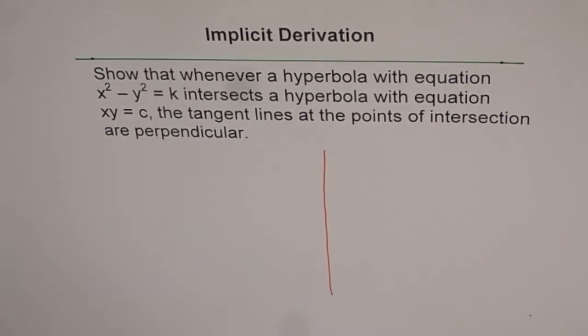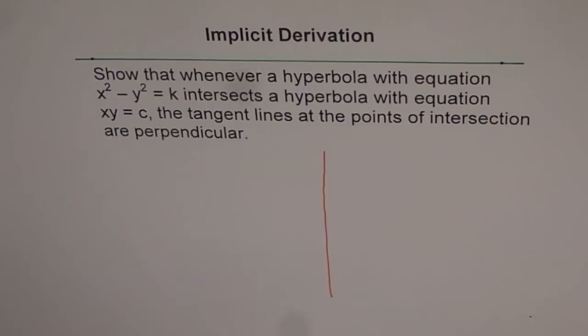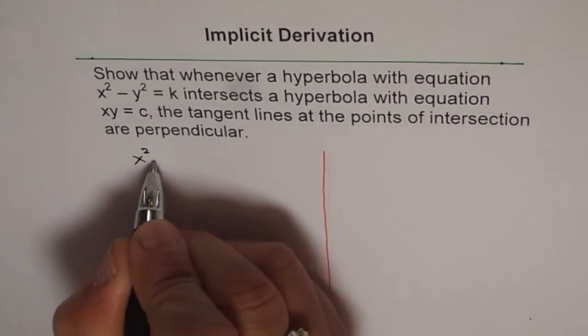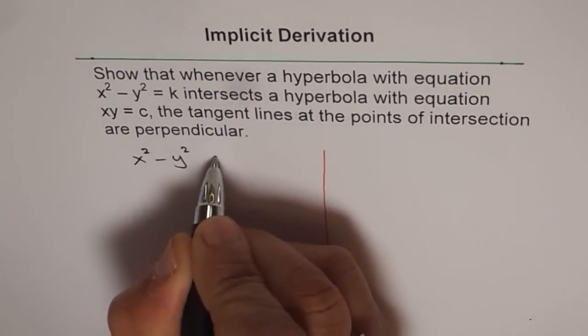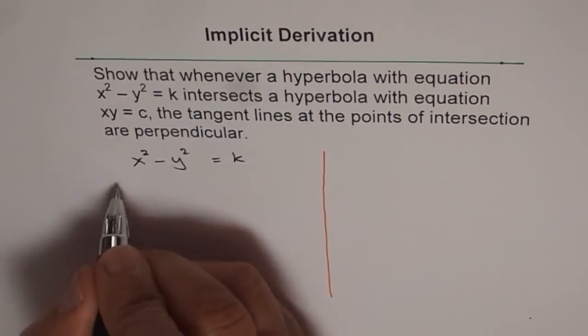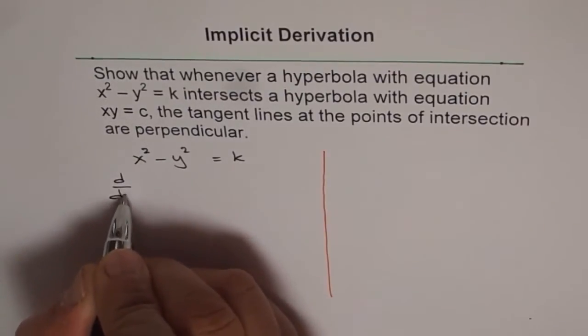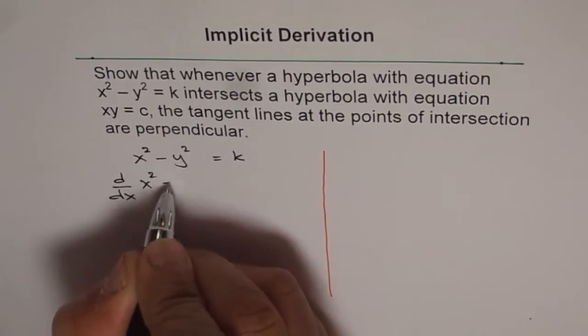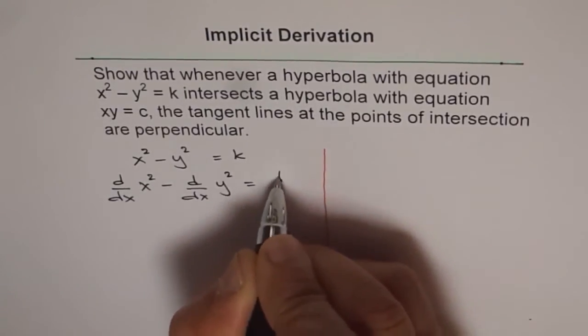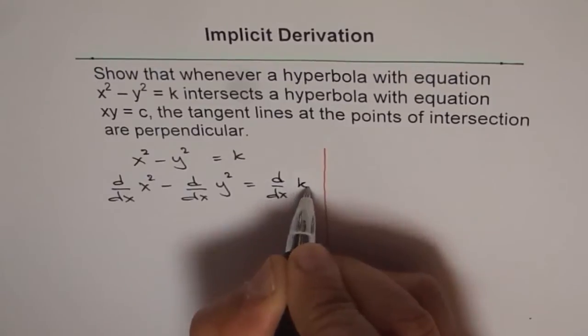So I will find derivative of both the functions side by side, and then we see how to get the answer. So we have one function which is x square minus y square equals k. Now let us differentiate it with respect to x. So we get d/dx of x square minus d/dx of y square equals d/dx of k.